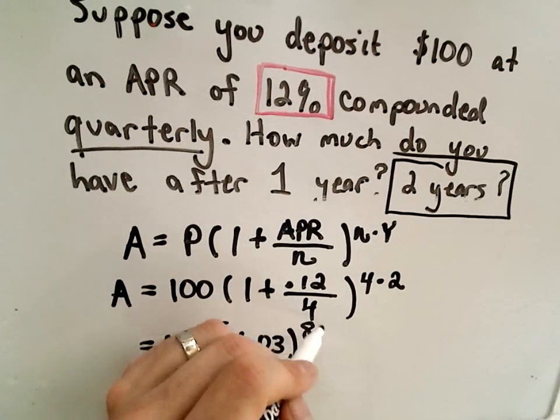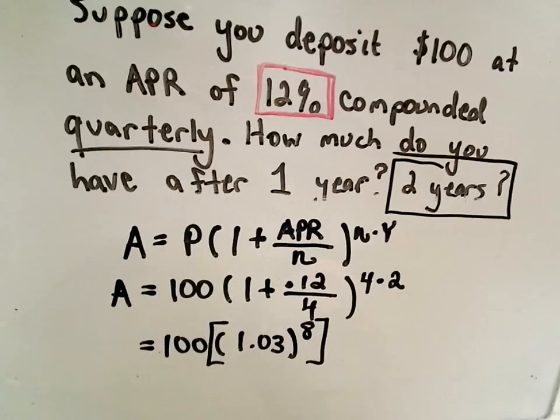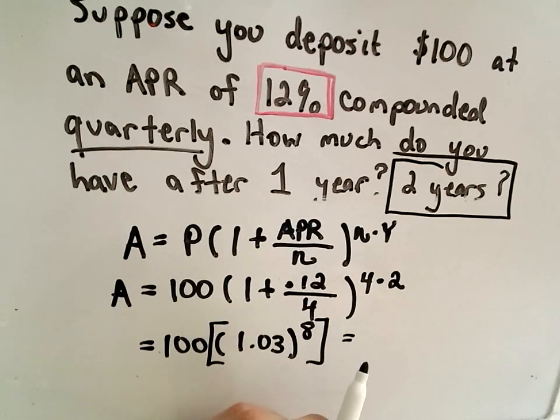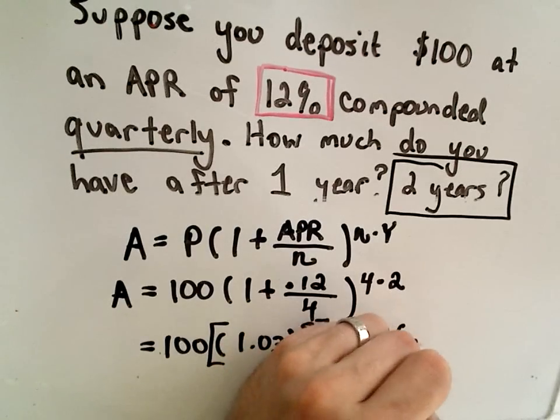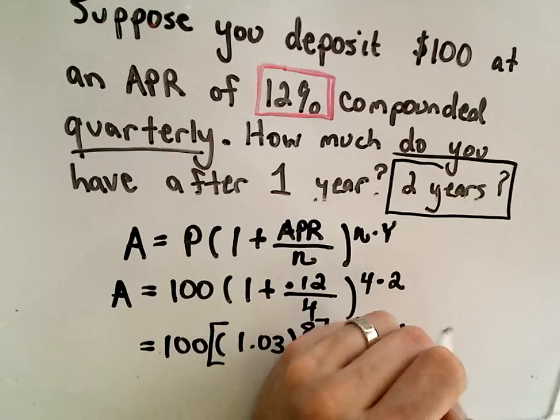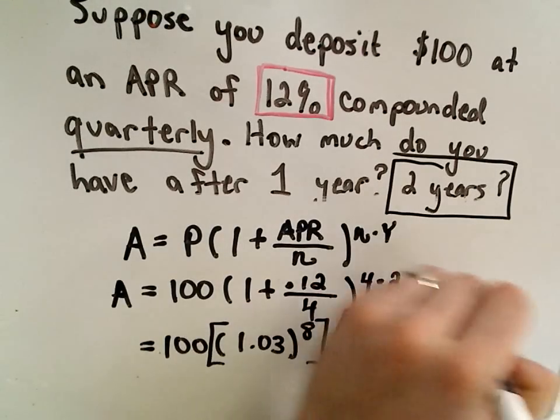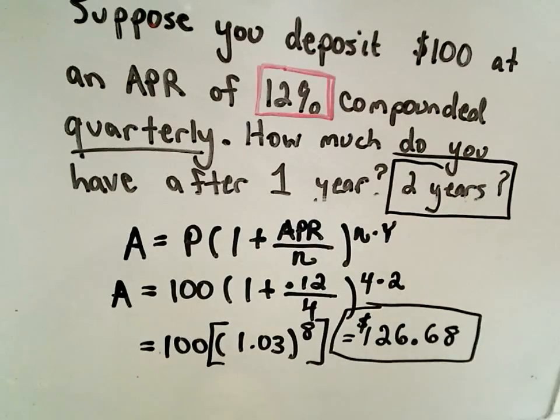Again, when you compute these, make sure that you do the exponent first. Otherwise, you'll get something bad. It'll be really big. Make your computer or calculator probably cry and won't give you a good answer. So if you get something nonsense, there's definitely a reason. So if you do the exponent first and then multiply this by 100, I am getting the value 126, and let's round off to the nearest penny, I get 68. And that seems like a very reasonable amount of money to have after two years at this interest rate.